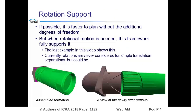It's always faster to plan without rotations when possible, but when that is not feasible, this framework supports using rotations when removing parts. We will see an example of this later. Note that our simple translation separation approach never considers rotations, but could in the future to help remove screw-like parts.